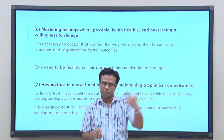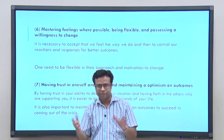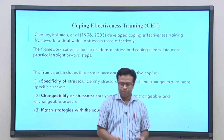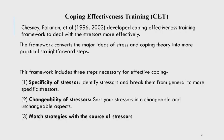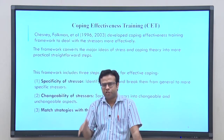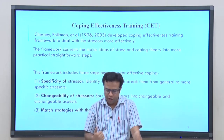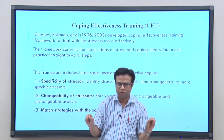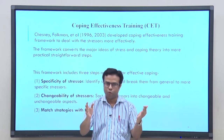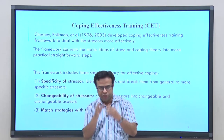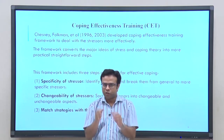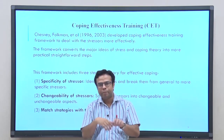These are the seven characteristics discussed by Kaplan that are part of effective coping. Effective coping should include at least some of these characteristics. Now we will talk about the concept of coping effectiveness training — specifically a training module developed by Chesney and Folkman in 1996. We will focus on the core characteristics of this training and understand how effective coping can be applied in our life.